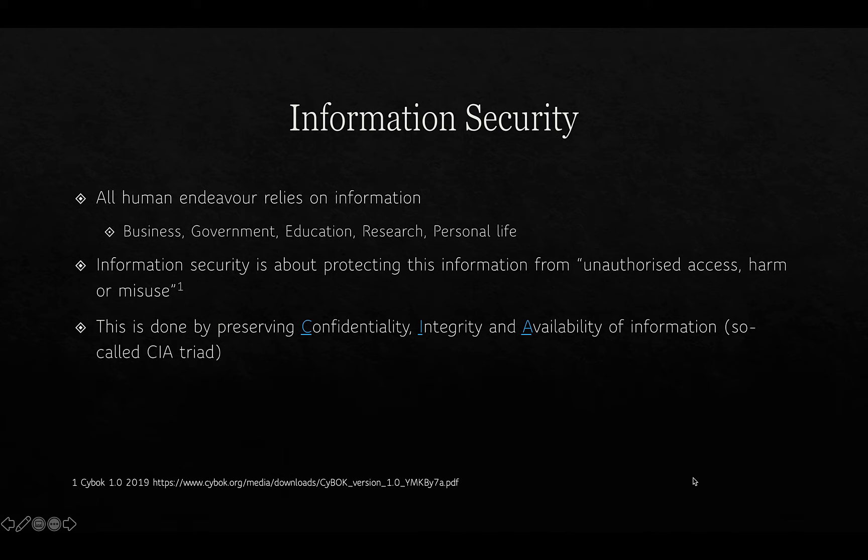The way that we do that is by preserving the attributes of information security: confidentiality, integrity, and availability. This is sometimes referred to as the CIA triad because of the initials of these three attributes. However, some people prefer not to confuse it with the US intelligence agency and call it AIC instead.